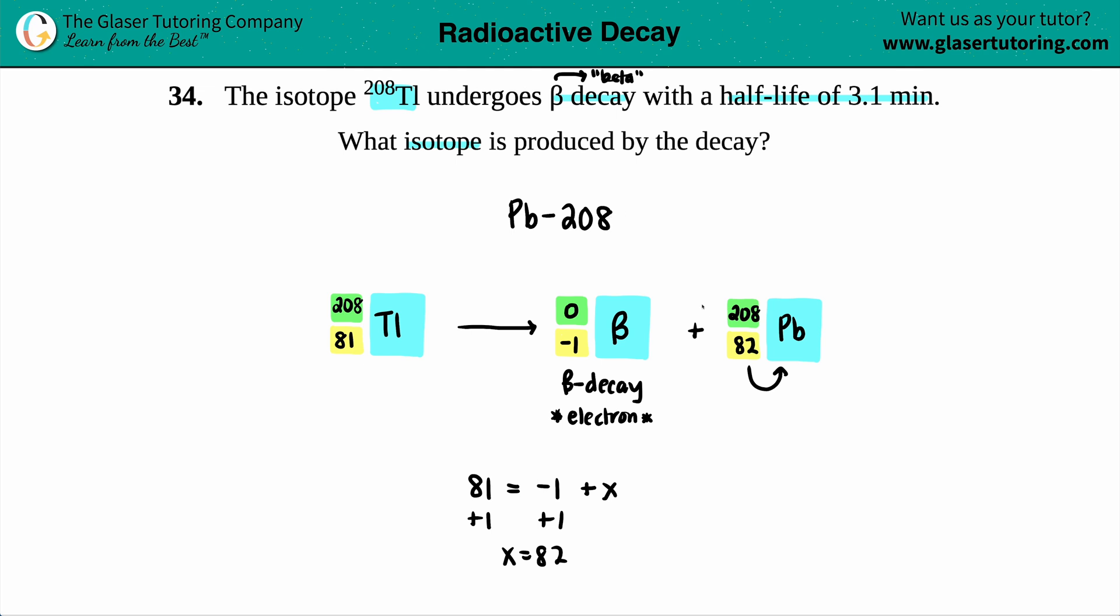Now you can give this as your final answer. You could say lead-208—it does not matter, both is acceptable. And that's the answer for this one. So lead-208 will be made when thallium decays and releases a beta particle. And that's it.